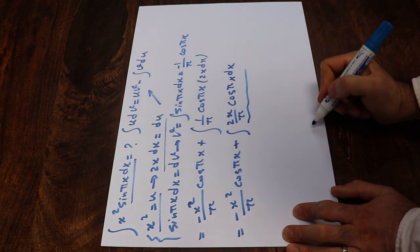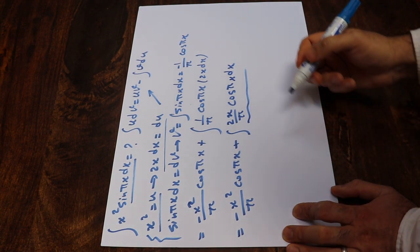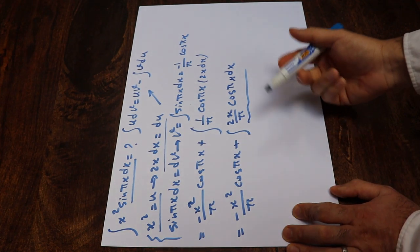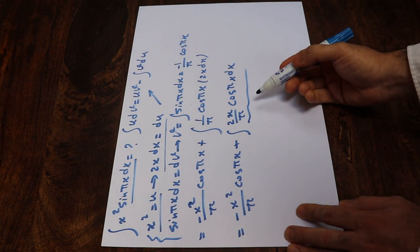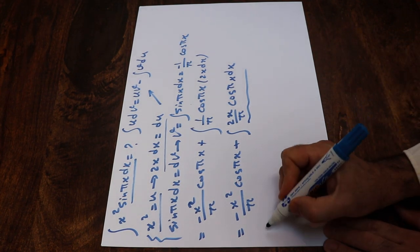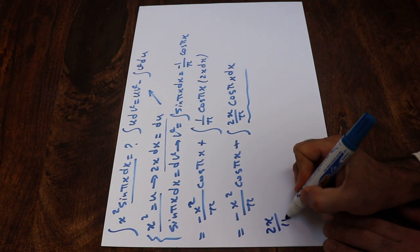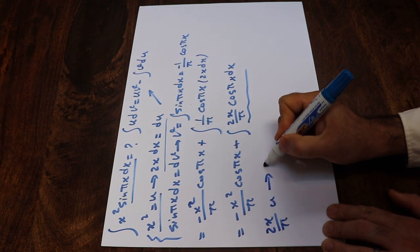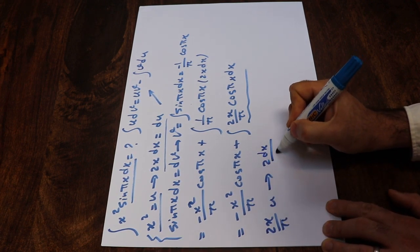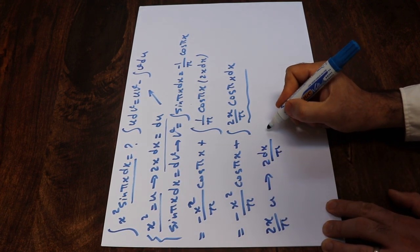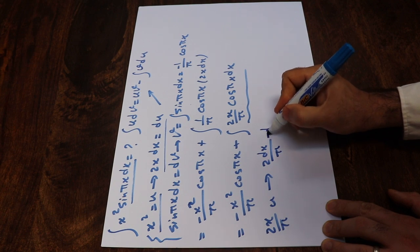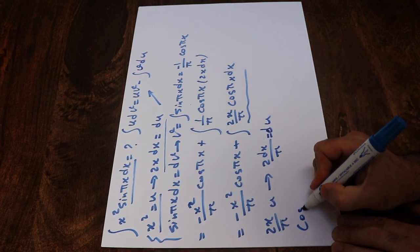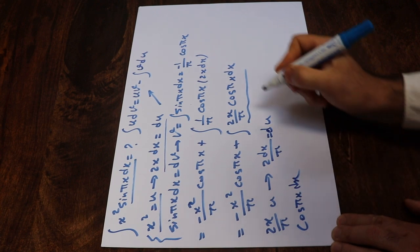To solve this integral, you need to apply the formula for integration by parts one more time. So here, if I define 2x divided by π as u, therefore 2 dx divided by π will be equal to du. And if I define cosine(πx) dx as dv,